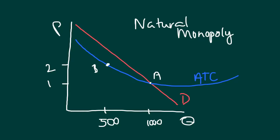So that's the idea of natural monopoly and barriers to entry. We've covered what a monopoly is, its three key characteristics, and the four sources of barriers to entry. From here, the next thing we'd want to do is look graphically at how a monopoly determines its profit-maximizing output. We'll do that in the next video.